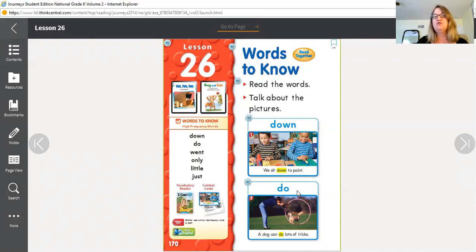Our next word is do. A dog can do lots of tricks. D-O, do. Remember it's important to say the word, spell the word, and write the word. So D-O spells do.